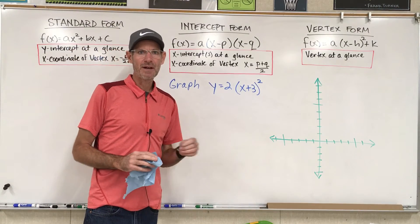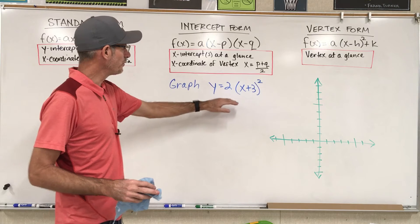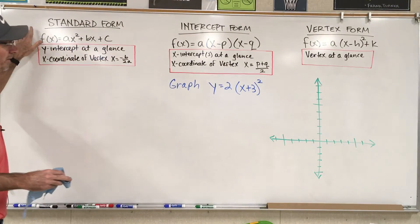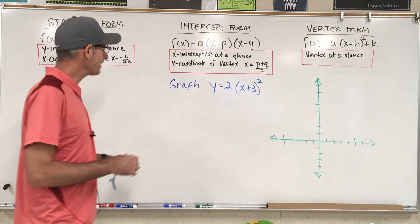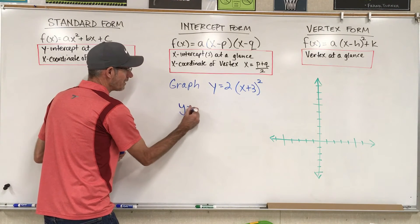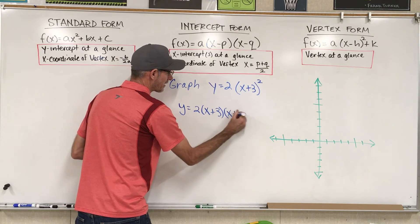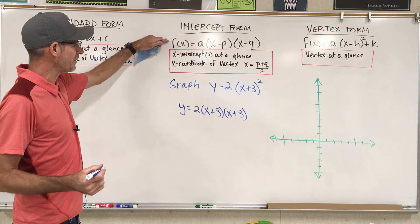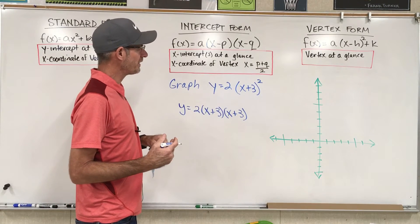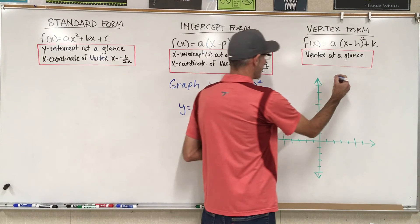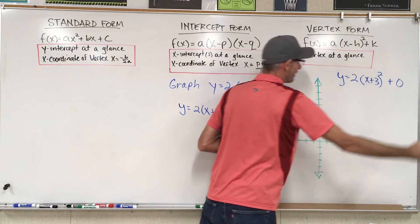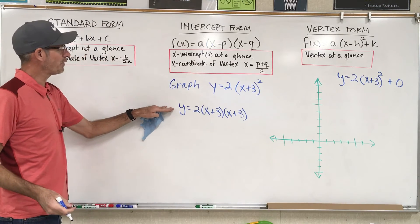For the final example on this video, we're going to graph y equals 2 times the quantity (x plus 3) squared. This is a more interesting problem. Is this in standard form? It has parentheses, so it's not standard form. Is it in intercept form? If you write it as y equals 2 times (x plus 3) times (x plus 3), that would look exactly like intercept form. But it also looks just like vertex form because it has a set of parentheses squared. So in vertex form, we can write it as y equals 2 times the quantity (x plus 3) squared plus 0.